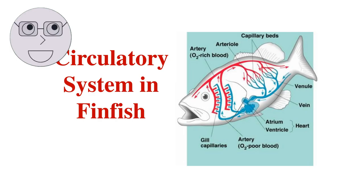Fish also have a unique circulatory system. Unlike mammals, fish have a single-loop circulatory system, where blood flows from the heart to the gills, where it is oxygenated, and then to the rest of the body. This allows fish to extract oxygen more efficiently from the water.